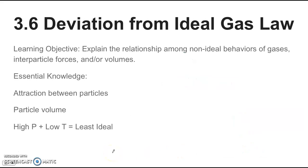And then 3.6 is on deviations from ideal gas law. The learning objective is explain the relationship among non-ideal behaviors of gases, inter-particle forces, and or volumes. So some stuff that you need to understand with this. First of all, that there is no such thing as an ideal gas. There's only real gases that approach ideal behavior under certain circumstances. Ideal gases have two big assumptions that are never really true. The first one is that there's no attraction between the particles in ideal gases. But in reality, there are some attractive forces between the particles. And the second assumption is that the particles have no volume.